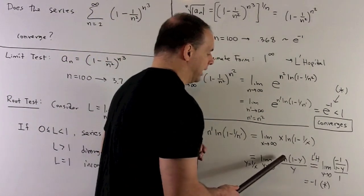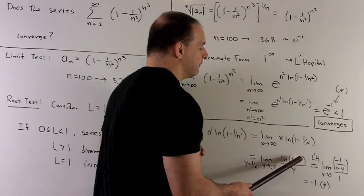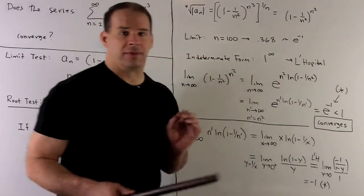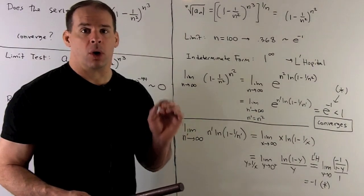Derivative of the top, what do we get? I have a natural log here. So what we're going to do is take the inside, flip it over, and then multiply by the derivative of the inside with respect to y. So I'll be -1/(1 - y).